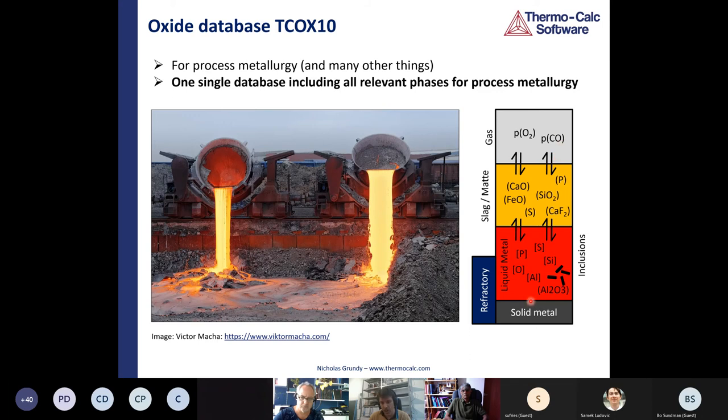And the liquid phase, which is arguably the most important phase. The liquid phase is described with the ionic two sub-lattice model, and the advantage of this model is that it describes the steel all the way, the liquid steel all the way from metallic to non-metallic. So the liquid can either be an oxide liquid, it can even be a sulphide liquid, or a metallic liquid. Typically these different types of liquids are separated by a miscibility gap, but the database can describe the liquid all the way from metallic to non-metallic. All the phases are in one single database, the TCOX database.